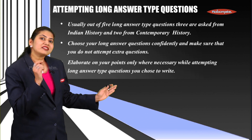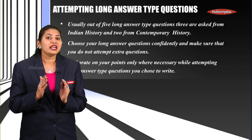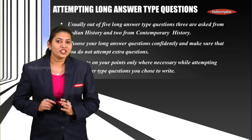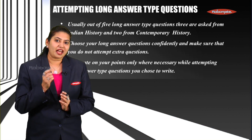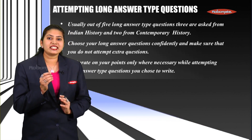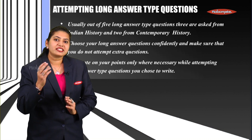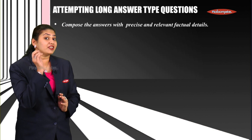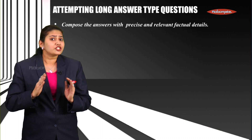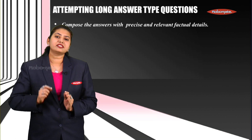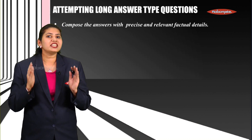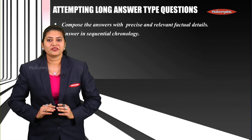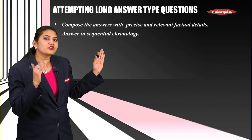Elaborate on the points which are necessary while attempting long answer type questions. For example, if asked about the immediate cause of the First World War, properly elaborate on the assassination of Archduke Franz Ferdinand — include the date of assassination, the assassin Gavrilo Princip, and the organization behind the plot. Write precise and relevant factual details. In civics, there is no compulsion to write article numbers, but if you choose to, ensure they are correct. Answers in history must be written in sequential chronology.